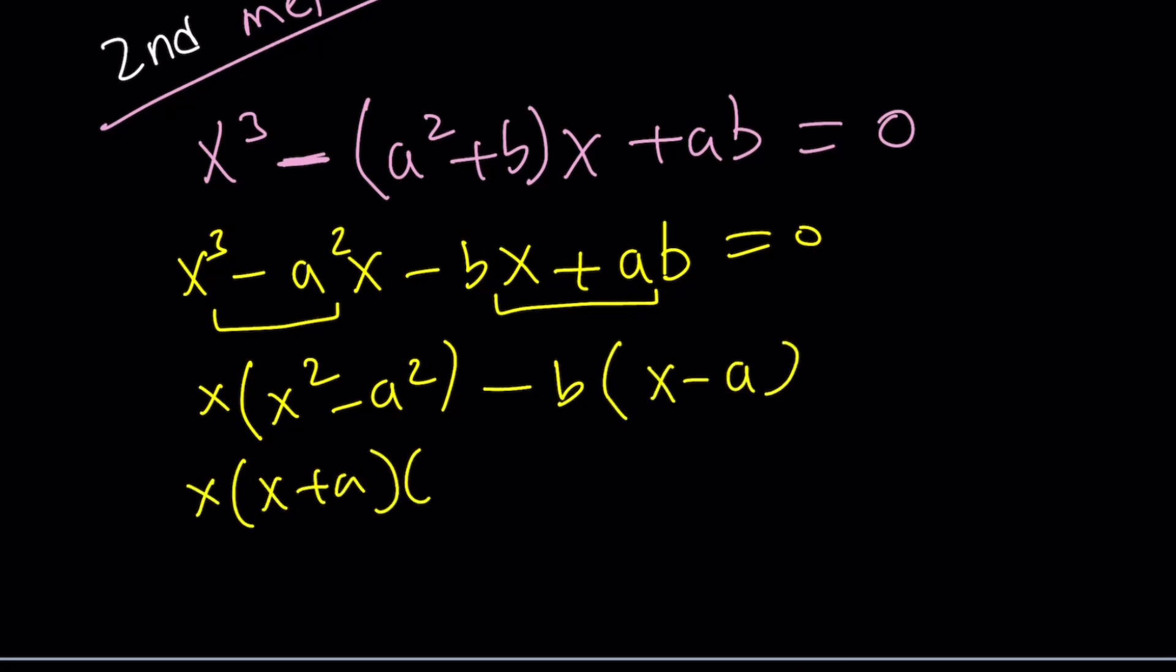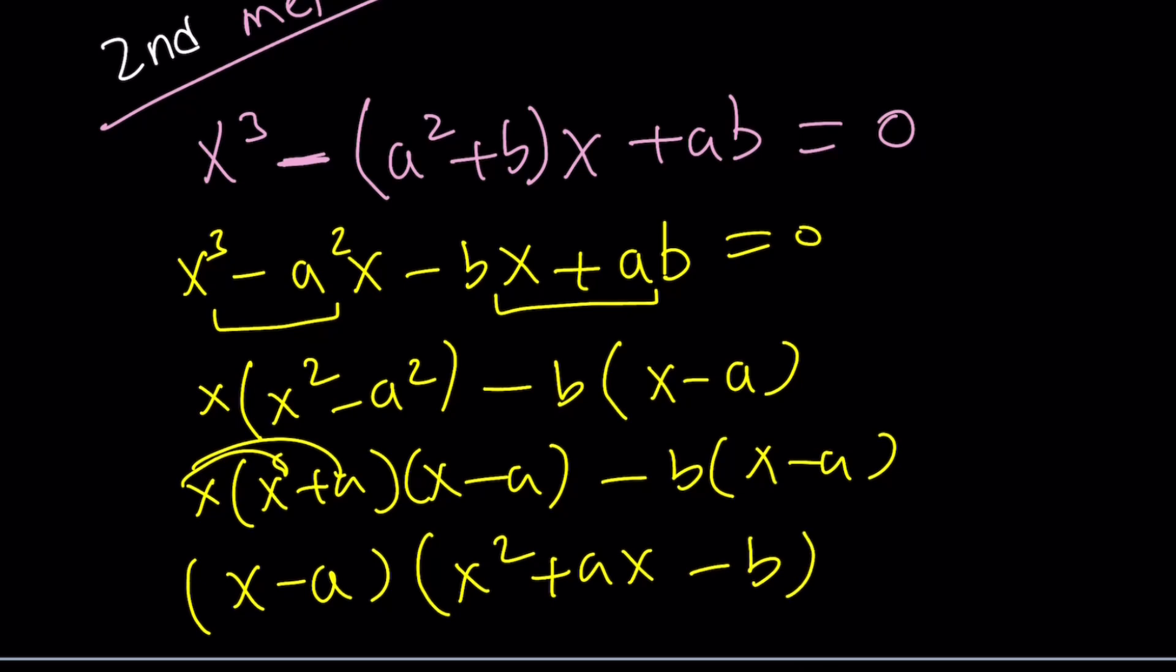You got a common factor, my friend. We're all good to go. Take x-a out. Distribute this. x²+ax-b. Yay! Success! So easy, right?